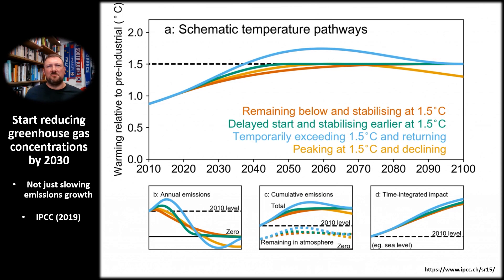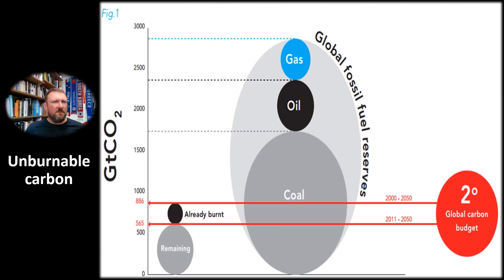There are a number of different models used to calculate carbon budgets based on different carbon accounting methods and assumptions. According to the IPCC's methodology, we need to be substantially reducing atmospheric greenhouse gas concentrations by 2030, and not just slowing the pace of emissions growth. An implication of the carbon budget is the existence of unburnable carbon — the undeveloped fossil fuel reserves still in the ground that we simply can't mine if the world is to adhere to the carbon budget and stay under that 1.5 degrees Celsius threshold. Keep this in mind when we look at the economics of climate change in week four.